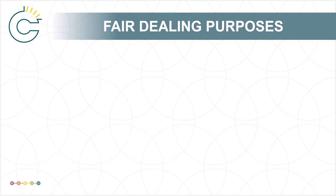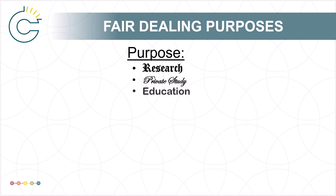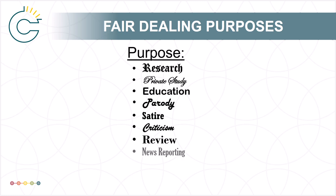Summarizing Section 29, there are eight Fair Dealing purposes, sometimes called categories: research, private study, education, parody, and satire. The latter three were added in 2012 revisions of the Copyright Act, along with criticism, review, and news reporting. These final three purposes come with a few limitations.